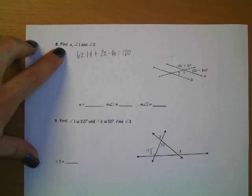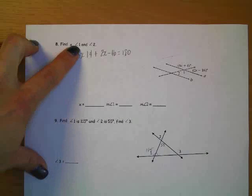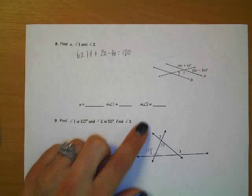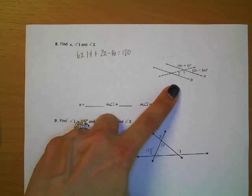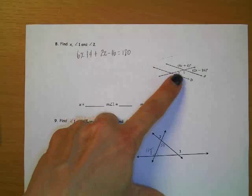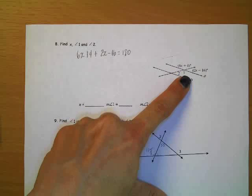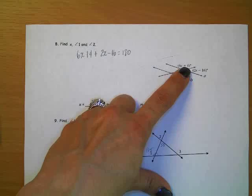It says number 8 that you're going to find x, the measure of angle 1, and the measure of angle 2. All right, so if we take a look at this, what you see is that the measure of angle 1 is vertical to this 6x plus 4.